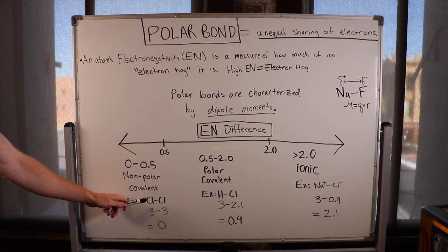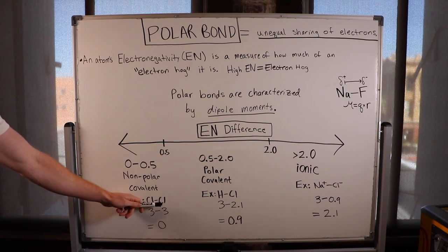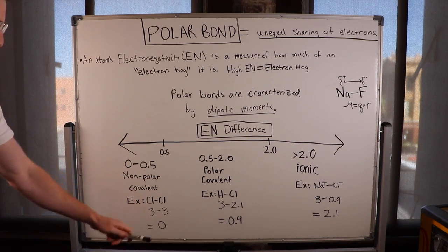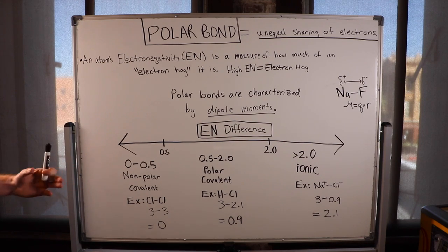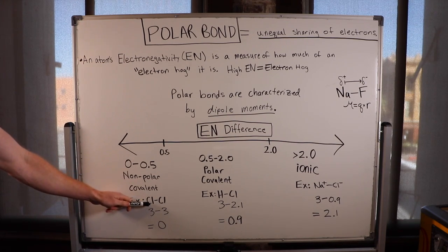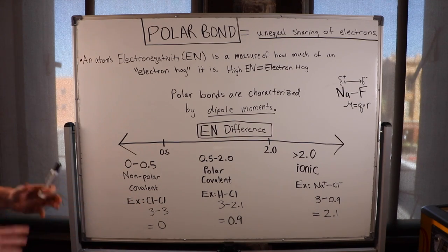In Cl₂, both chlorines have an electronegativity of 3, so the difference is zero — this is a nonpolar bond with no unequal sharing of electrons. Chlorine is just as much of an electron hog as the other chlorine, so they share equally.